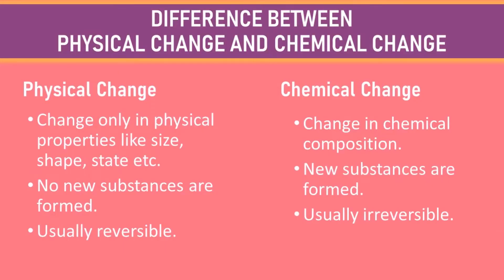Let's now see if burning of a candle is a chemical change or a physical change. Physical changes are changes in the physical properties of substances like shape, size, color, state, etc. No new substances are formed in these changes, and these changes may be reversible. Whereas in chemical changes, new substances are produced and these are generally irreversible.